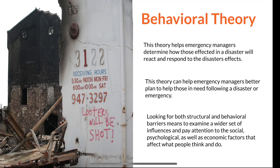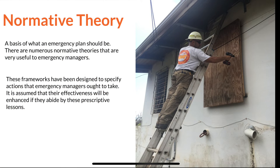This theory can help emergency managers better plan to help those in need following a disaster or emergency. Looking for both structural and behavioral barriers means examining a wider set of influences and paying attention to the social, psychological, as well as economic factors that affect what people think and do. The normative theory is a basis of what an emergency plan should be. These frameworks have been designed to specify actions that emergency managers ought to take, and their effectiveness will be enhanced if they abide by these prescriptive lessons.